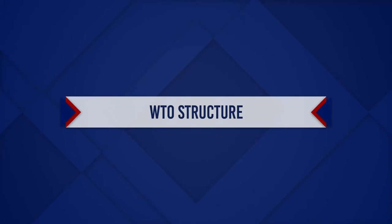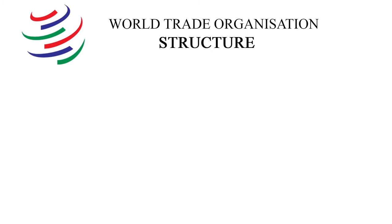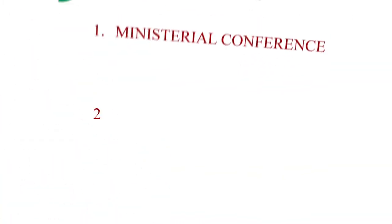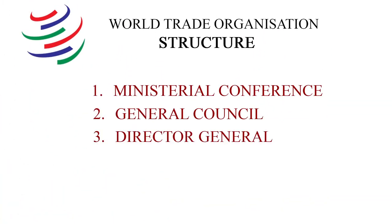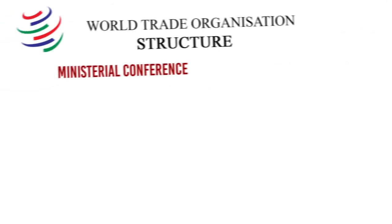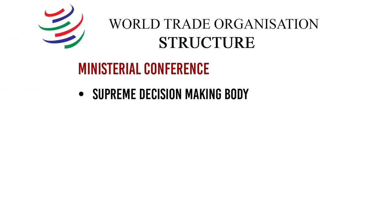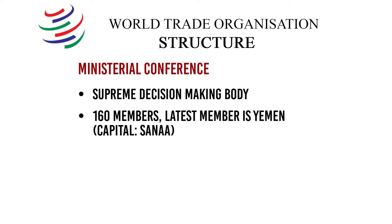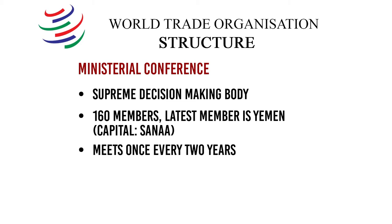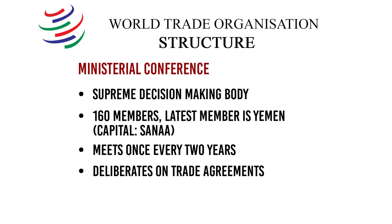Let's look at the WTO structure. The three important wings of WTO are Ministerial Conference, General Council, and Director General. The Ministerial Conference is the supreme decision-making body in WTO. It has 160 members. The latest to join was Yemen, which has the capital of Sanaa. The Ministerial Conference meets every two years and deliberates on trade agreements.